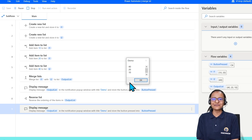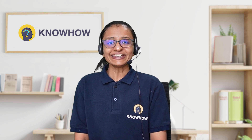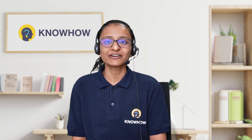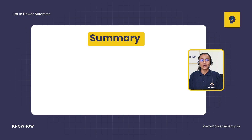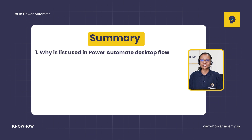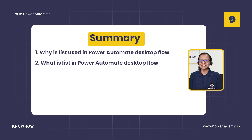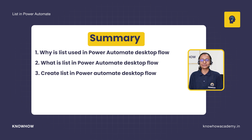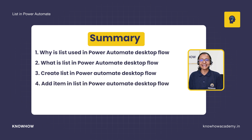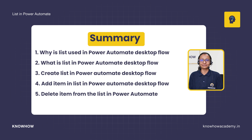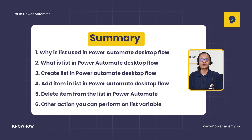I hope you understand how to perform operations on lists in Power Automate Desktop Flow. Before ending this video, let me recap what you learned: First, why a list is required in Power Automate Desktop Flow. Second, what is a list. Third, how to create a list. Fourth, how to add and display items. Fifth, how to remove an item from the list. And sixth, the different operations and actions you can perform on a Power Automate Desktop list.